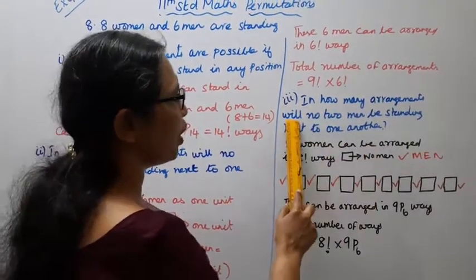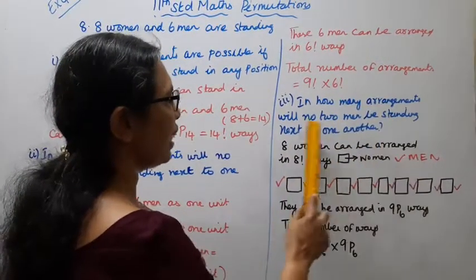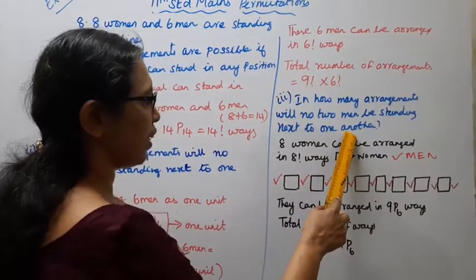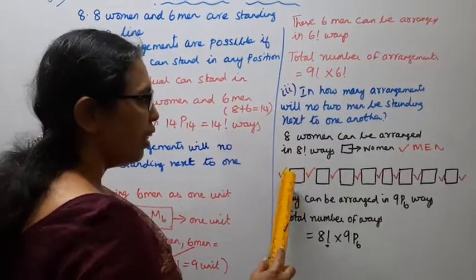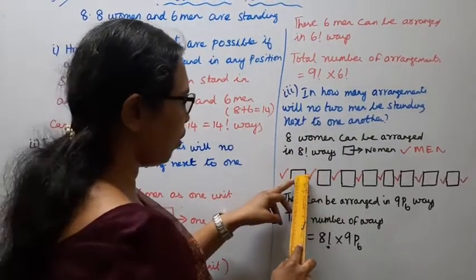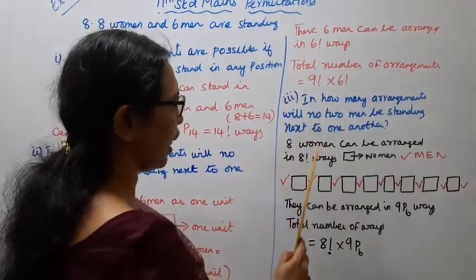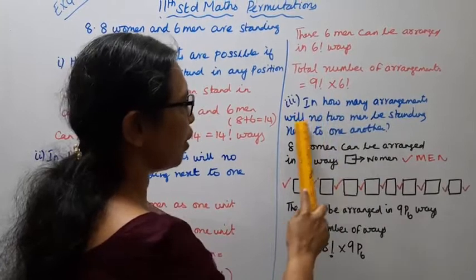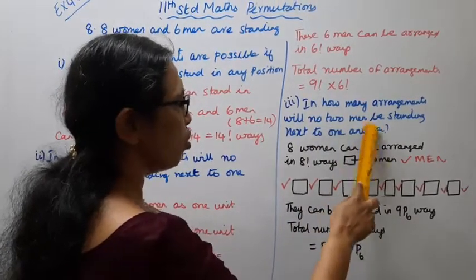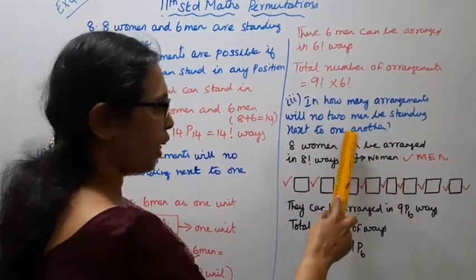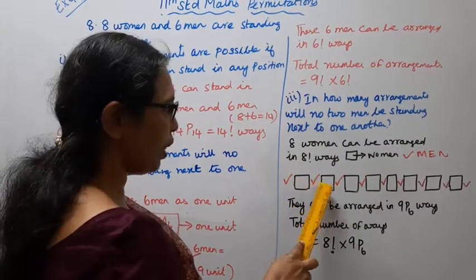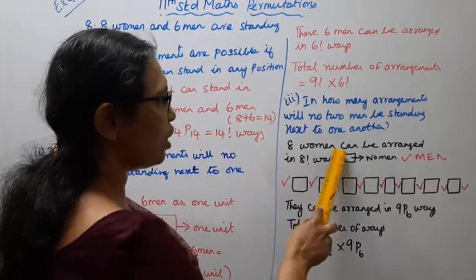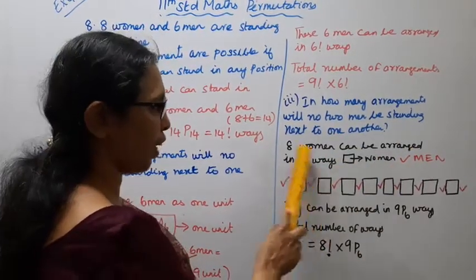Third: In how many arrangements will no two men or women be standing next to one another? One unit, one man, two men, and the third one man, and the fourth one man. 8 men, and they can be arranged in 8 factorial ways.